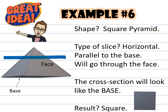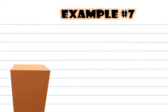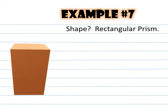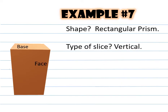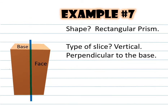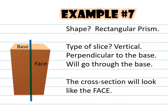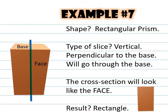Example number seven: this is called a rectangular prism. The type of slice is vertical — it is perpendicular to the base, will go through the base. The cross section will look like the face. The result is obviously a rectangle.